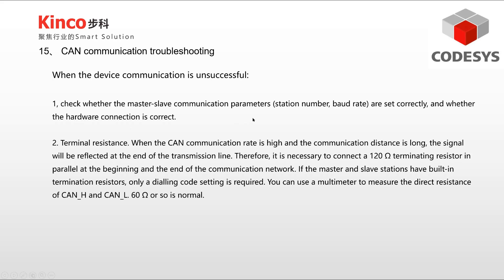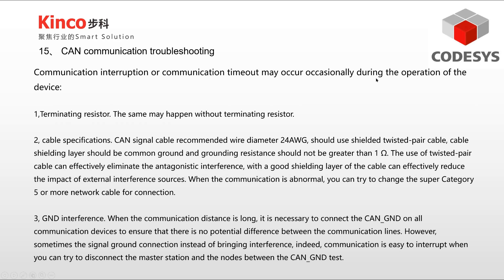Second, check the terminal resistance. When the CAN communication rate is high and the communication distance is long, the signal will be reflected at the end of the transmission line. Therefore, it is necessary to connect a 120-ohm terminating resistor in parallel at both the beginning and end of the communication network. If the master and slave stations have built-in termination resistors, only a DIP switch setting is required. You can use a multimeter to measure the direct resistance of CAN-H and CAN-L — around 60 ohms is normal. Communication interruption or timeout may occasionally occur during operation, so first check the terminating resistor, as this may happen without one.